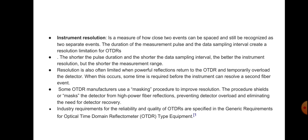The duration of the measurement pulse and the data sampling interval create a resolution limitation of the OTDR. The shorter the pulse duration, the shorter the data sampling interval and the better the instrument resolution, but the shorter the measurement range. Some OTDR manufacturers use a masking procedure to improve resolution — the procedure shields or masks detections from high-power fiber reflections, preventing detector overload and eliminating the need for detector recovery. Resolution is often limited when powerful reflections return to the OTDR and temporarily overload the detector, requiring some time before the instrument can resolve the next fiber event.